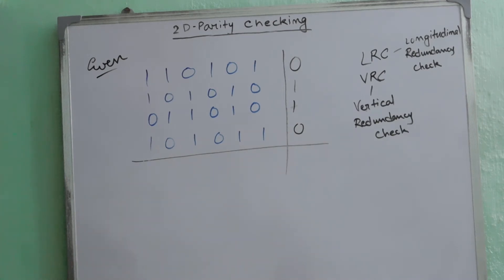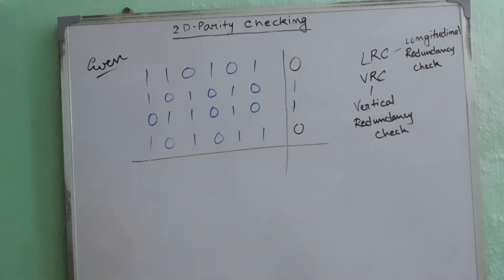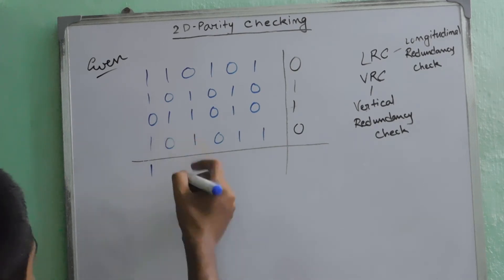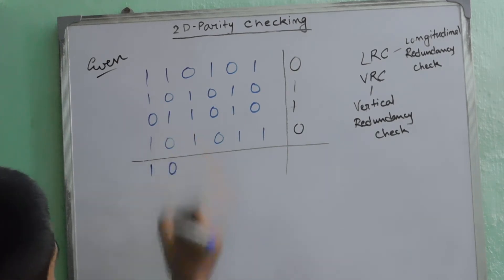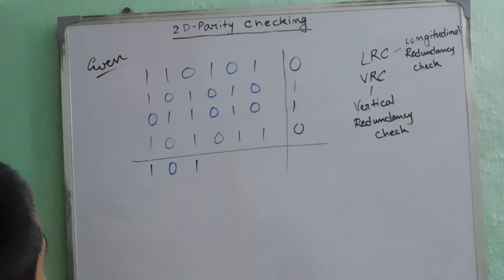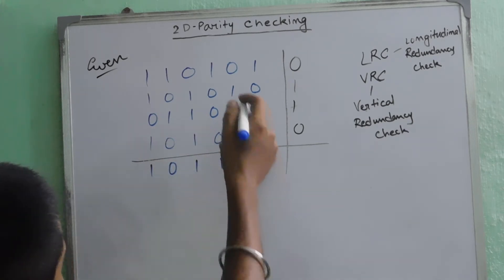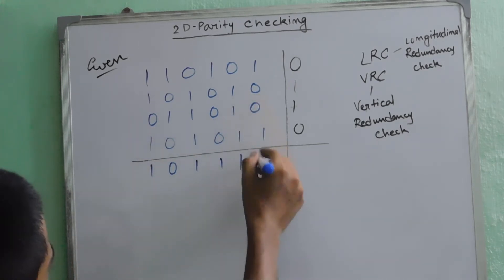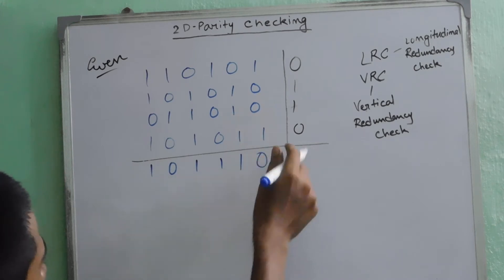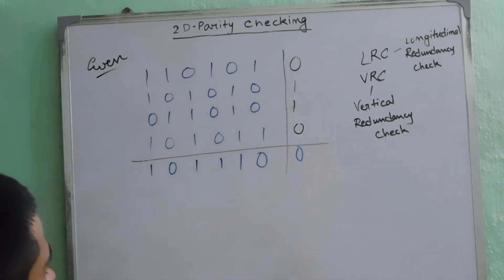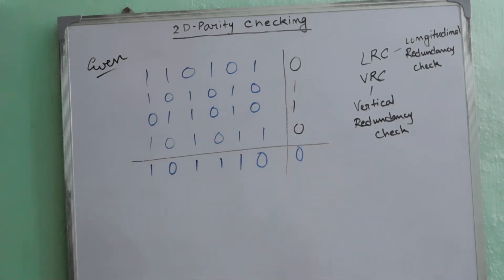Now we will calculate the VRC. The first VRC will be 1, the second VRC will be 0, the third VRC will be 1, the fourth VRC will be 1, the fifth one will also be 1, the sixth one will be 0, and this one will be 0. So these are our LRCs and VRCs.